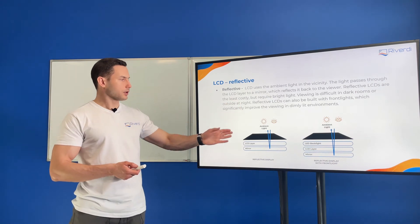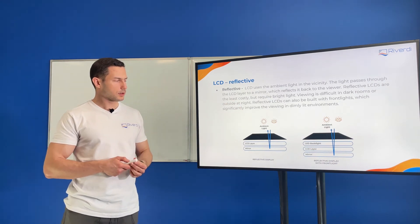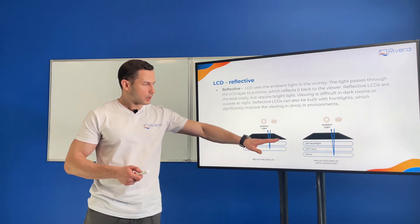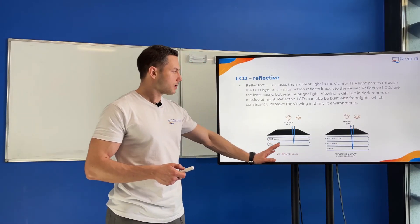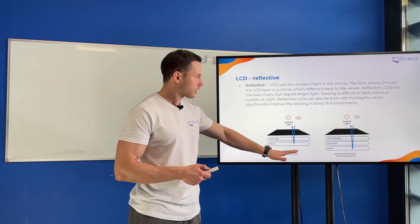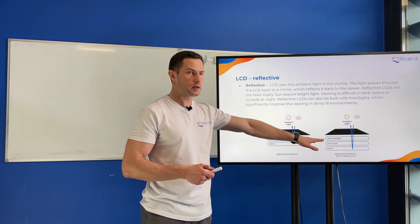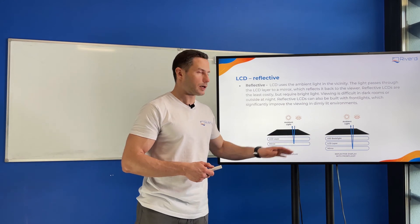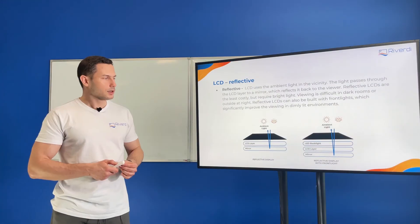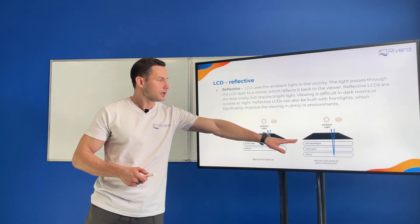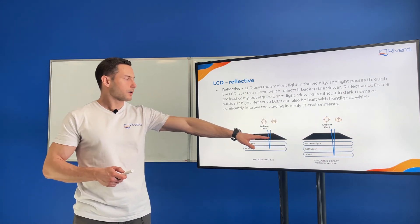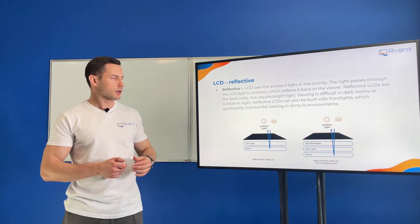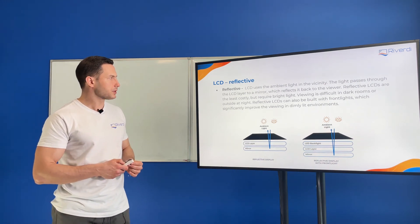The back of the screen is a mirror, so the light goes back — we have a reflection here. A variation of the reflective display is a reflective display with a front light. We have the same stack from the back with the mirror and the LCD, but the light source is a front-light LED, not a backlight. It gives us light that is then reflected inside the mirror.